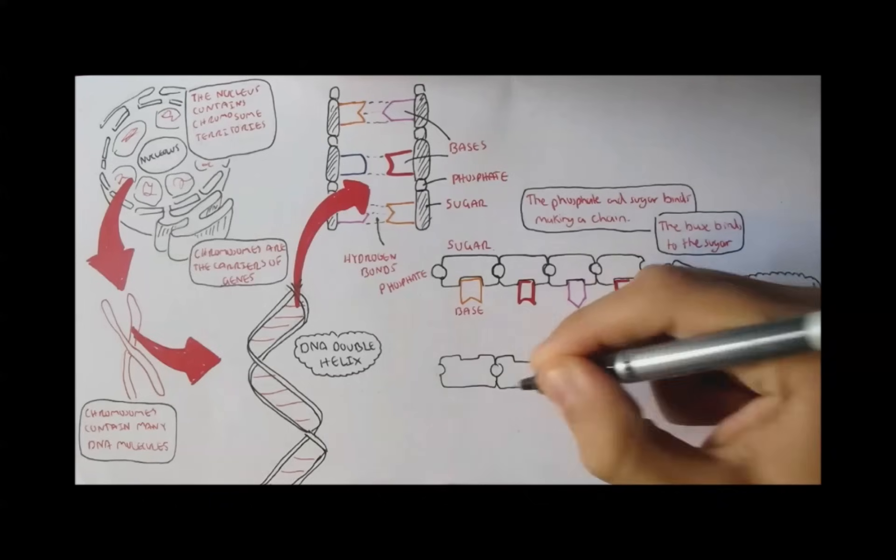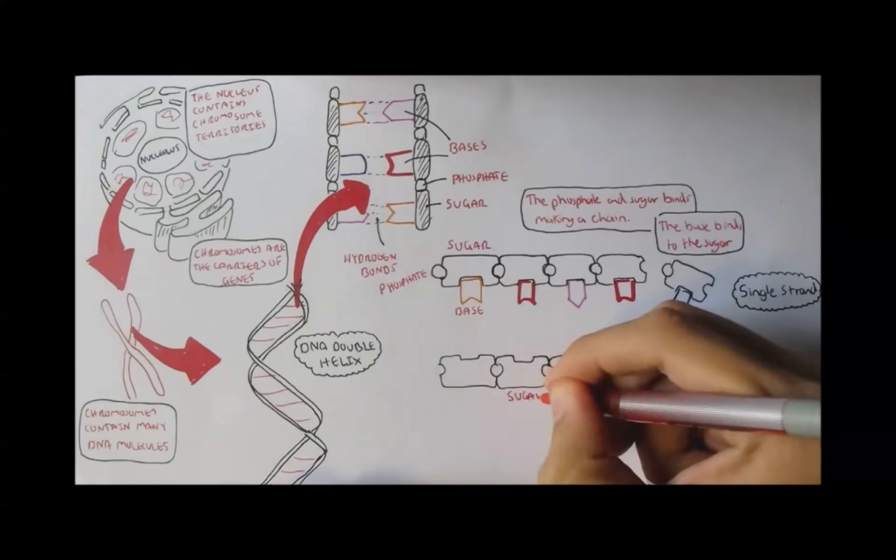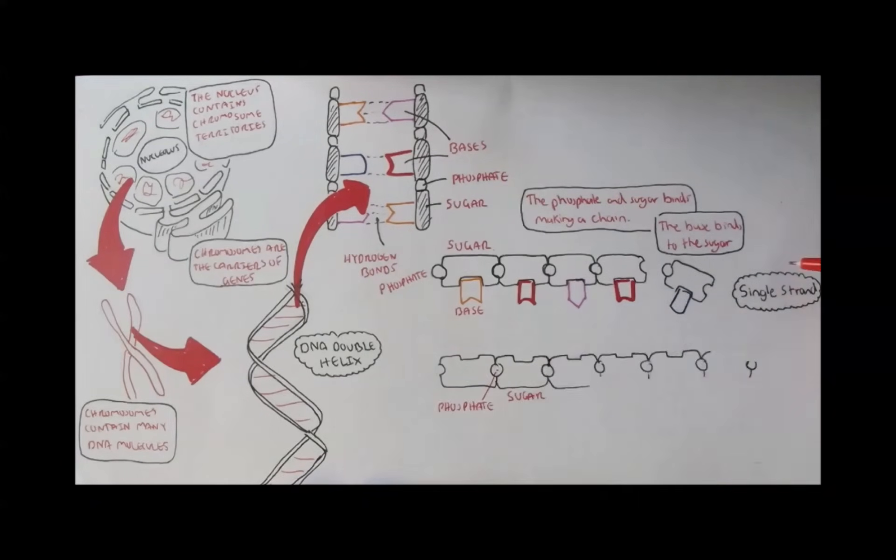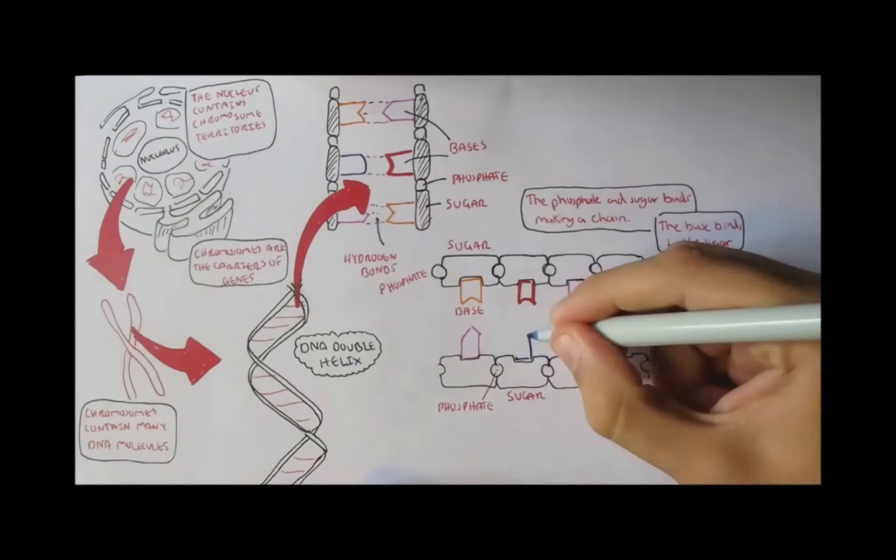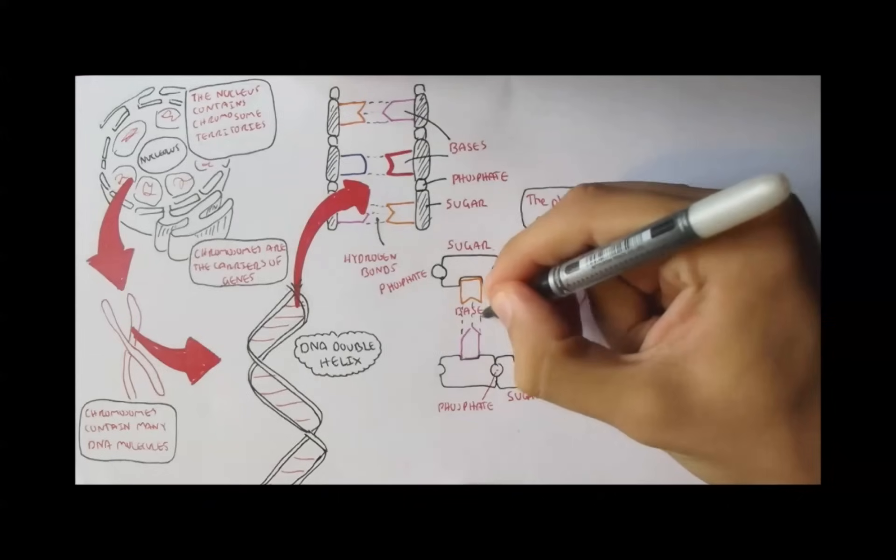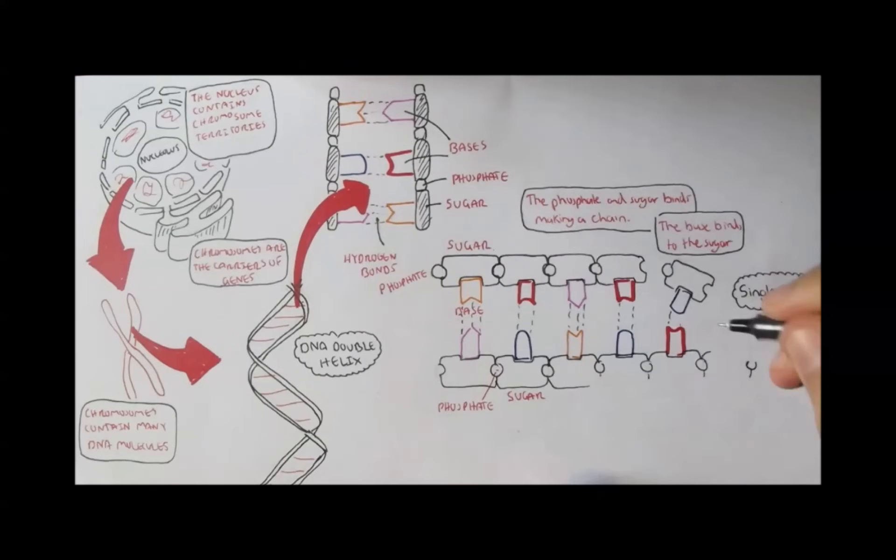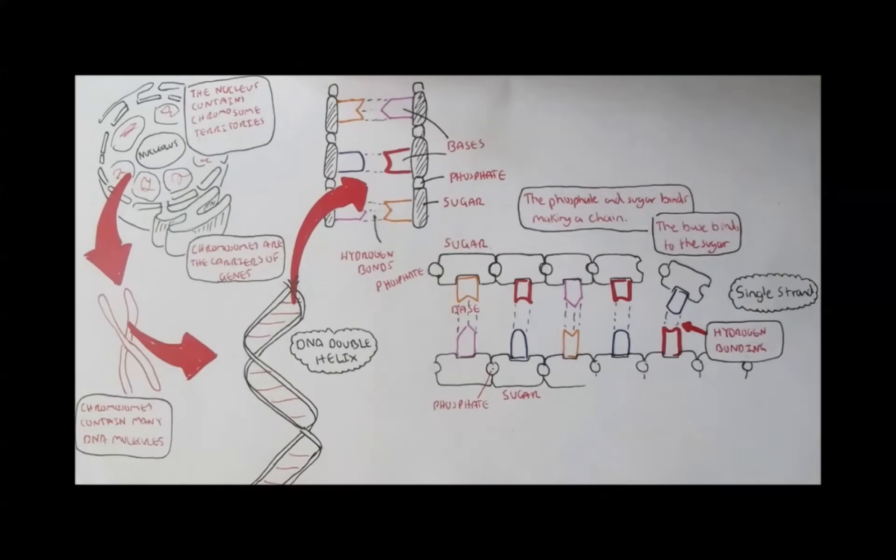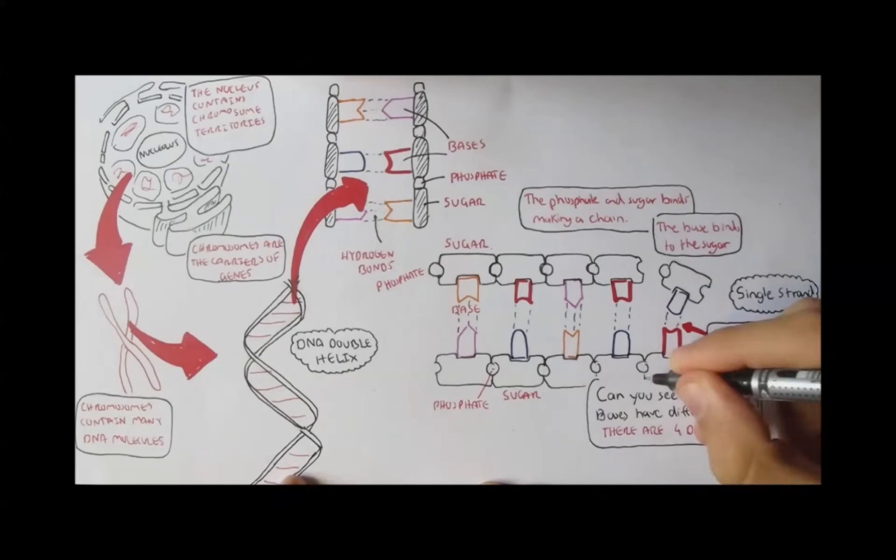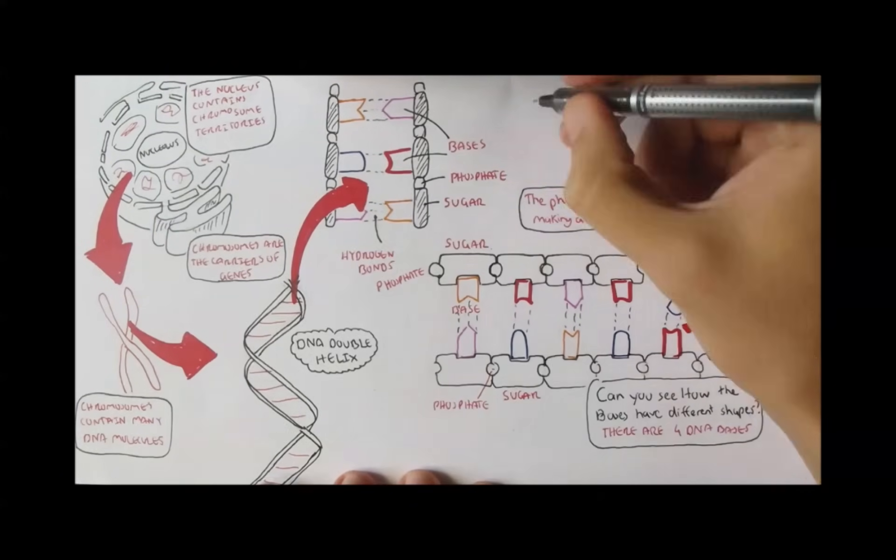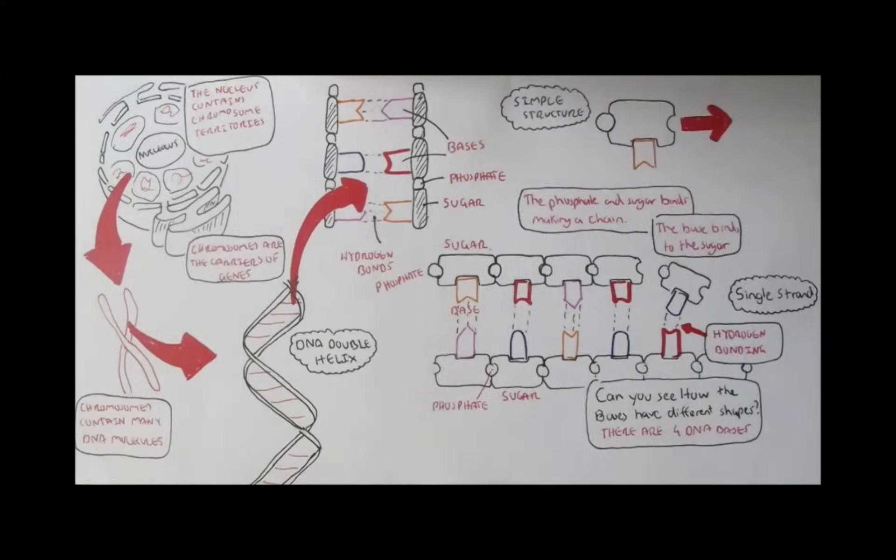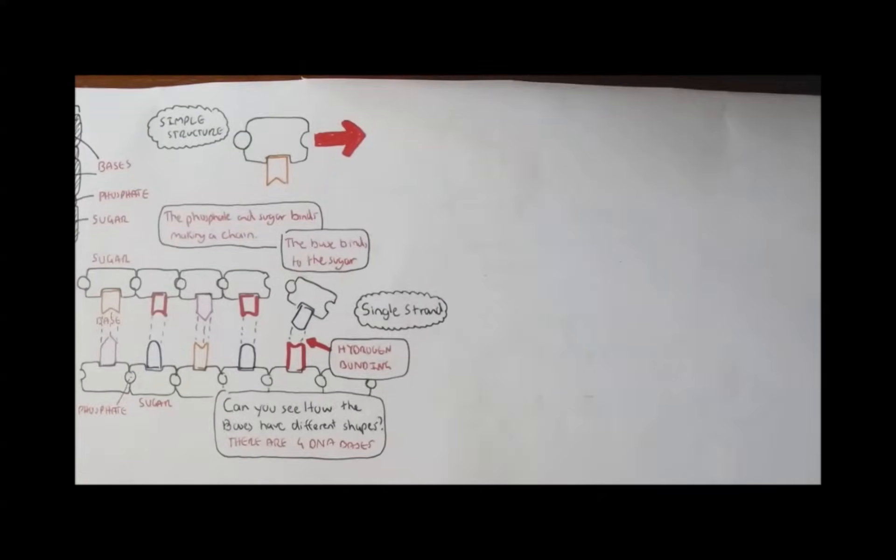If it were double-stranded, parallel to the first strand are again a chain of phosphate and sugars, where the bases are able to bind to the bases on the other strand using hydrogen bonds. But can you see how the bases, there are four different colors of bases? Two matching pairs? Well, there are only four bases in our DNA. But in order to introduce them, I will have to divert from the simple structure of one nucleotide and look at the chemical structure.